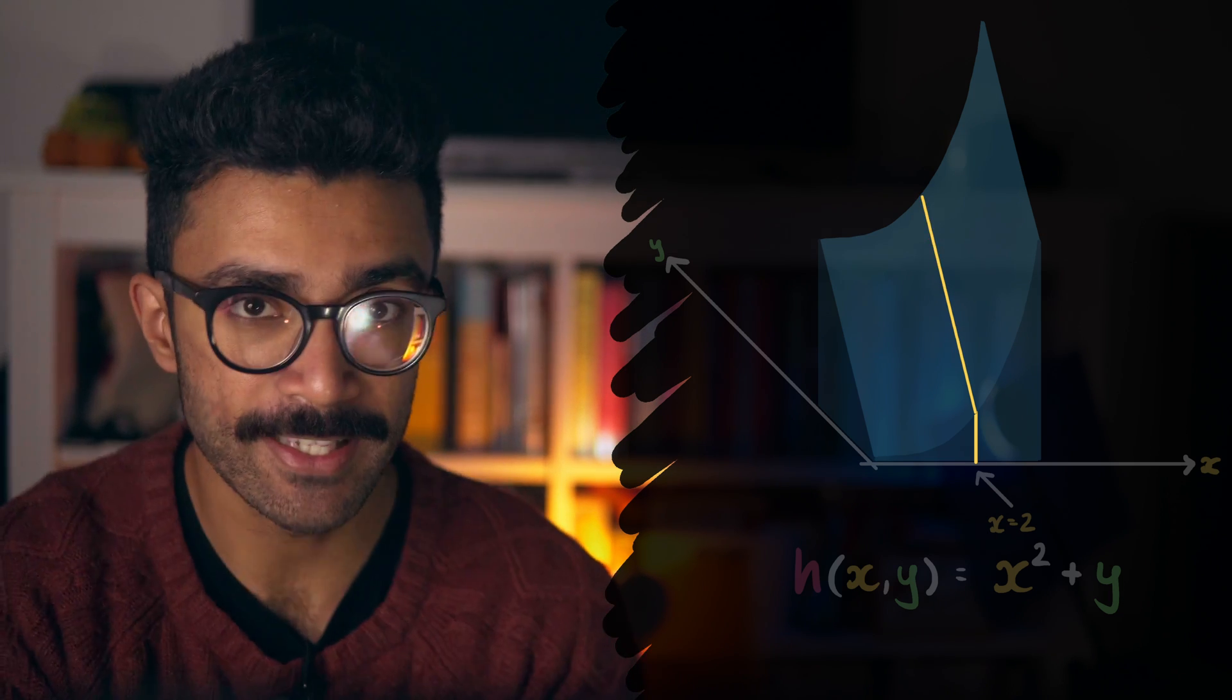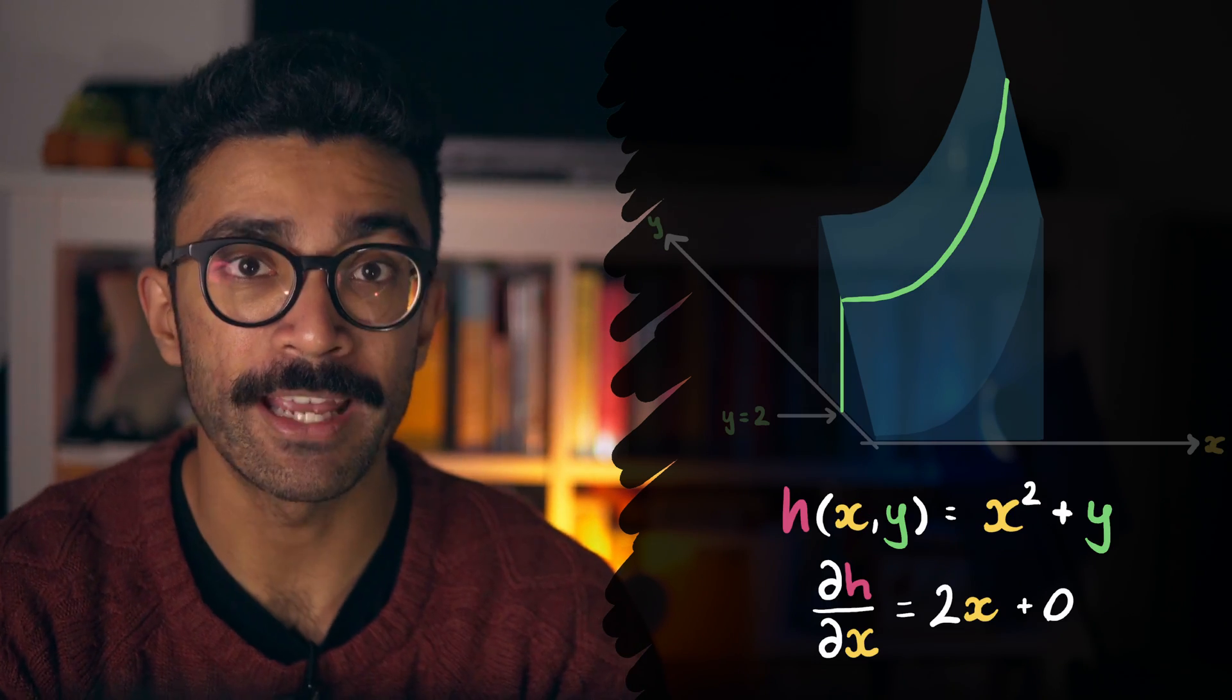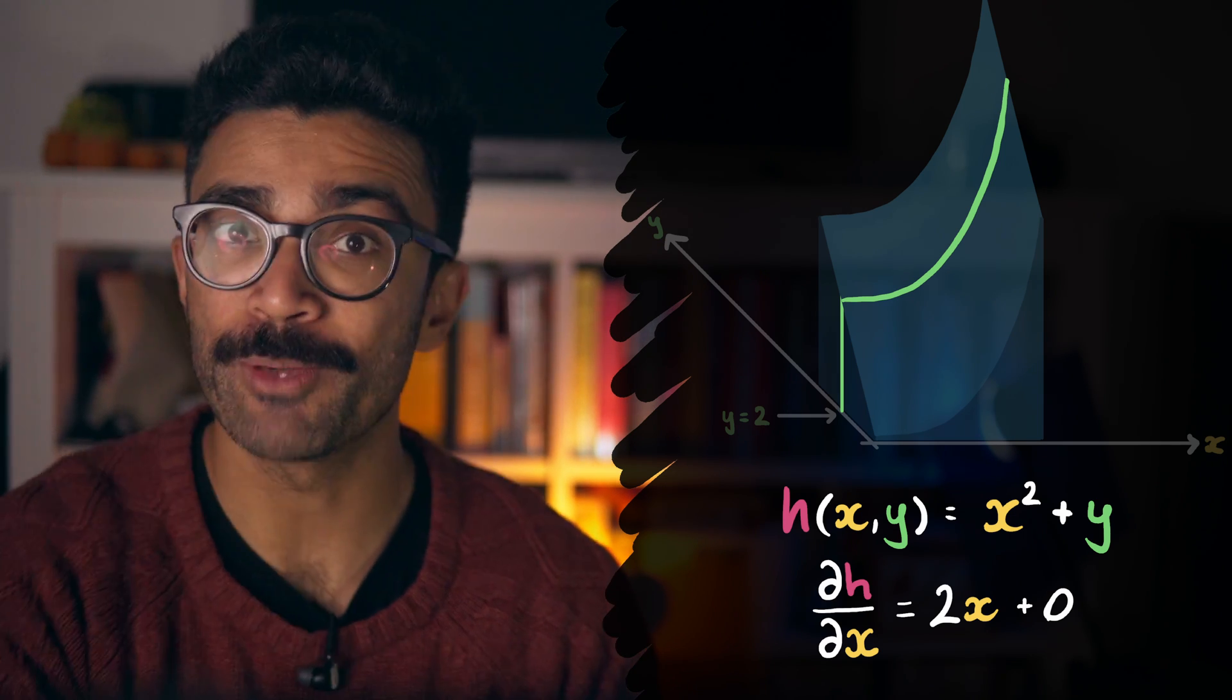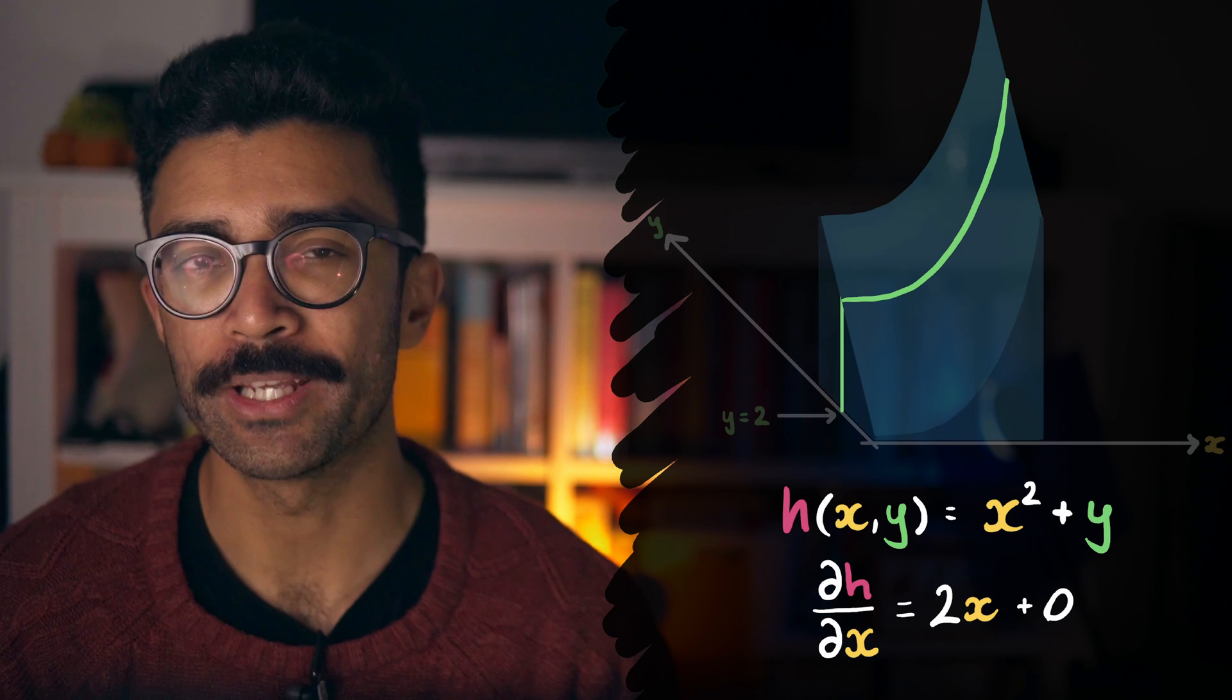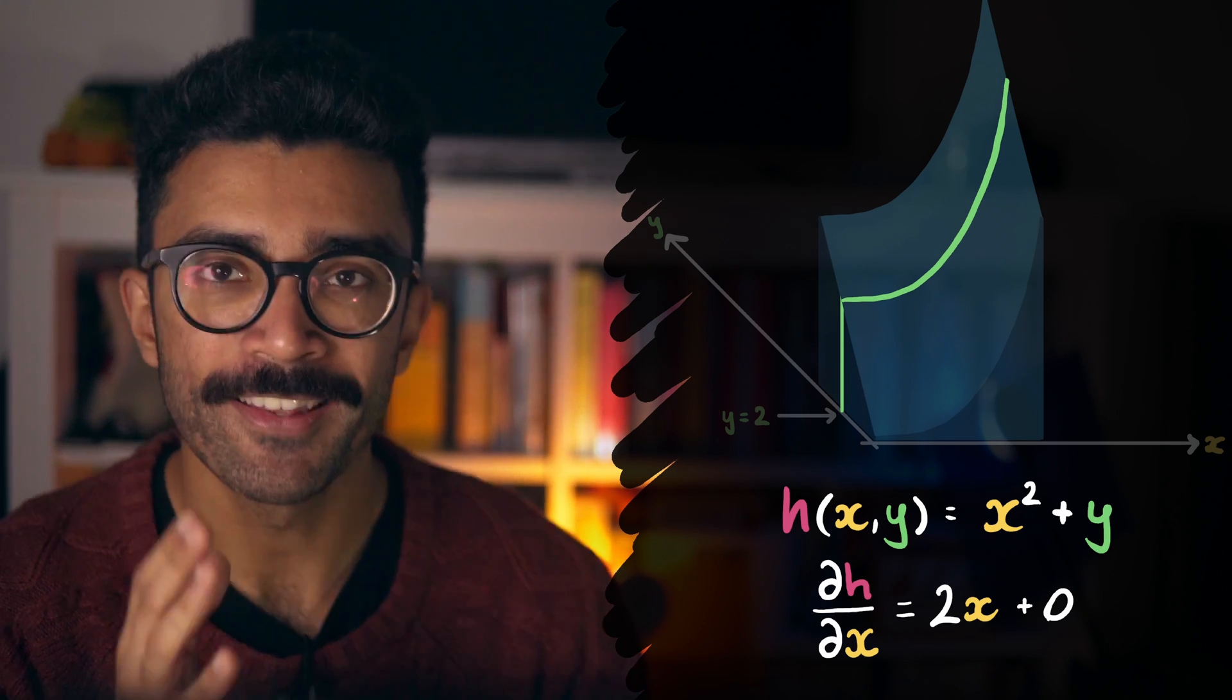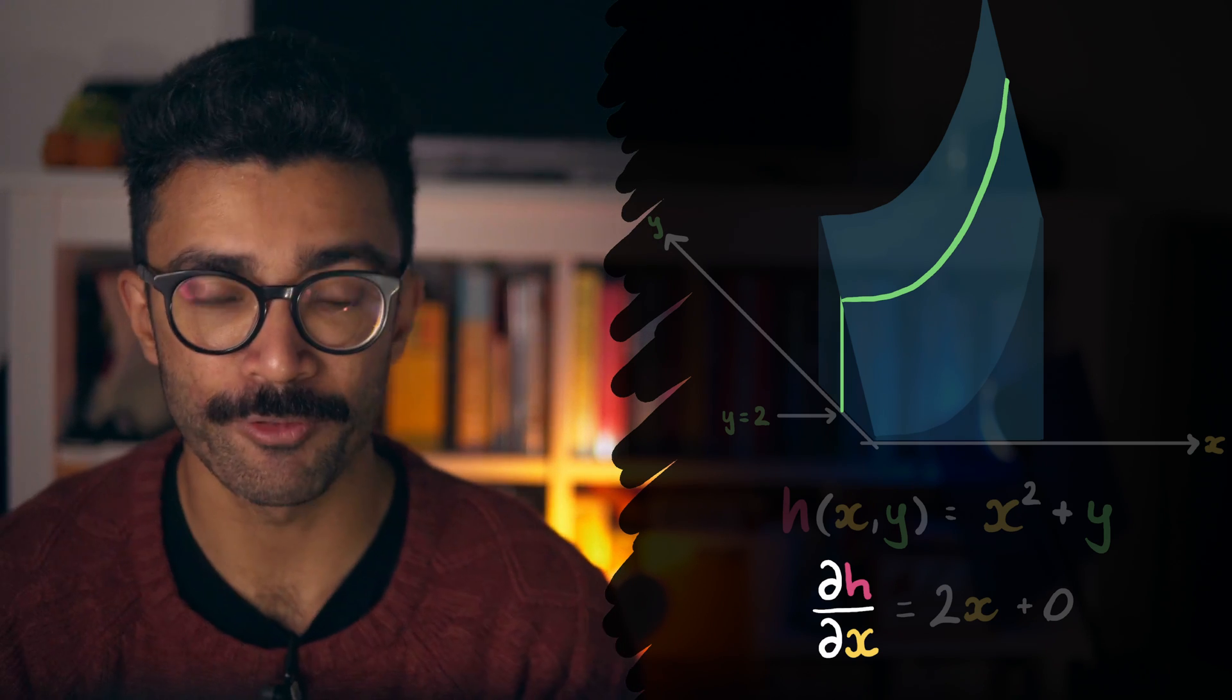And this is the precursor to exactly the kind of information partial derivatives allow us to find. Calculating the partial derivative of h with respect to x allows us to see how the height changes as we move along the x direction for a fixed value of y. That fixed value is one we can choose, but importantly it stays fixed once we choose it. This notation, using the curly d's rather than the straight d's, makes it clear to us that we're looking at a partial derivative rather than just a normal total derivative.